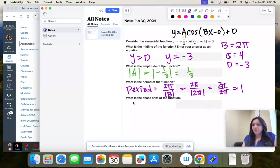And then our phase shift is c over b. So four over two pi. So let's put all that in.